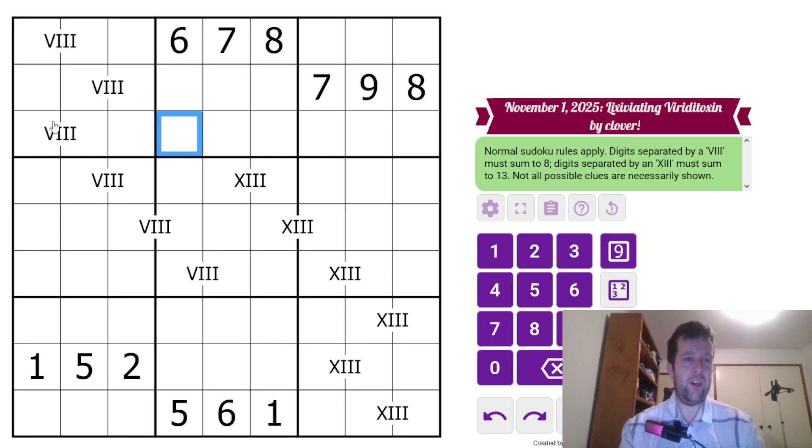Now, let's start in the top left. There are three ways to make eight with two digits. There's six two, seven one, and that can't be either of them, so it must be three and five. We've got five down here. Let's do five and three.